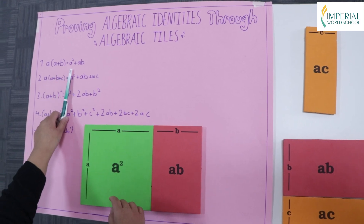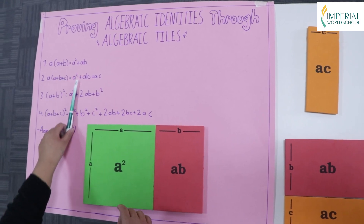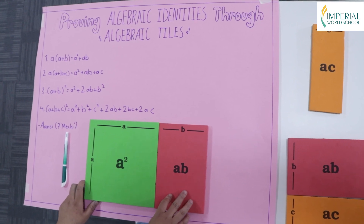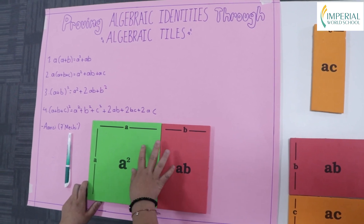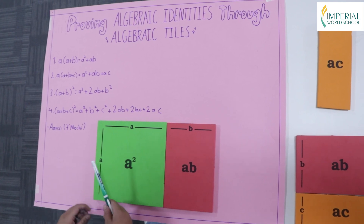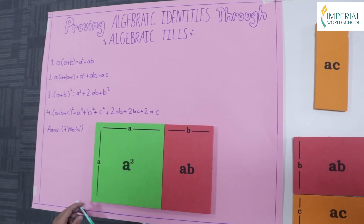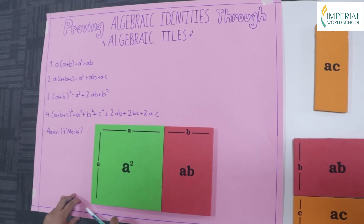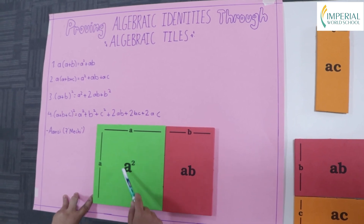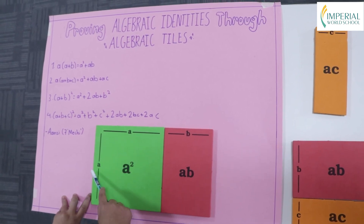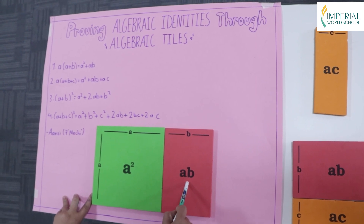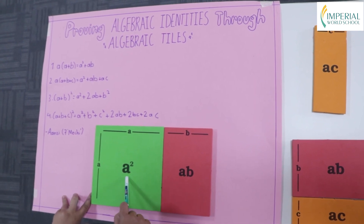So first let's move on to our first identity, which is a times (a + b) equals a² + ab. Here I have an a² tile and an ab tile. The length is a + b and the breadth is a. Using the formula length times breadth, a times a gives a², and a times b gives ab. Hence our first identity is a² + ab.